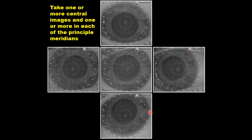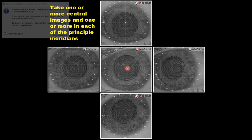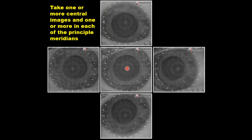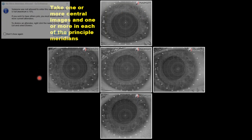To help us out, what Medmont does — and it's the only corneal topographer that does this — it allows us to take images with various fixations: with the patient looking right down the center, looking up pushing the rings down, looking nasal pushing the rings temporal, and looking temporal pushing the rings nasal. Essentially we're moving the Placido reflection all over the cornea.